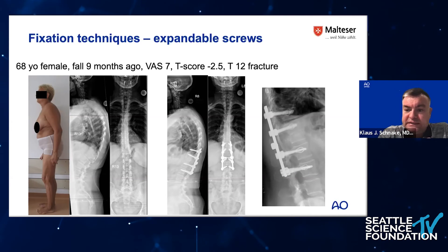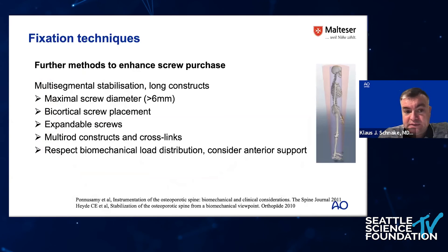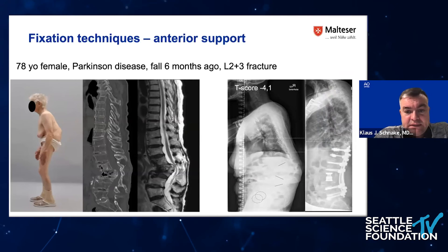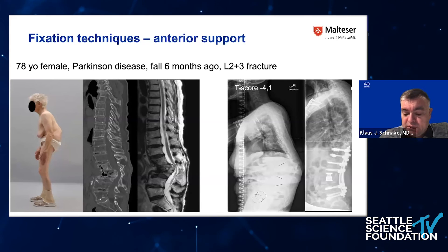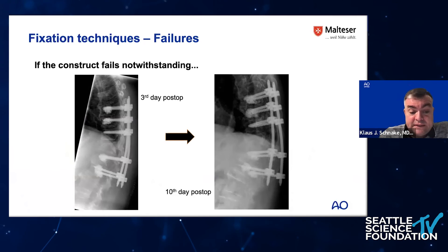Augmented screws can be removed because they have low resistance to reverse torque. Additional methods include multi-rod constructs, cross-links, and respecting biomechanical load distribution with sagittal realignment. Here is an example of a Parkinson's patient with severe osteoporotic local kyphosis at L2–L3 after a fracture, realigned with anterior and posterior surgery. However, constructs can still fail even when everything appears to have been done correctly — here a rather long construct with augmented screws still failed.